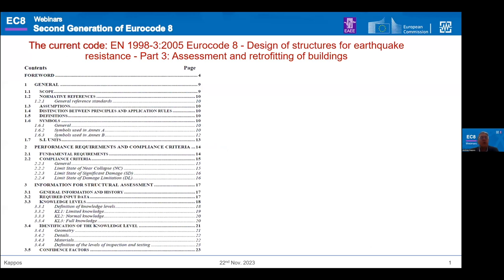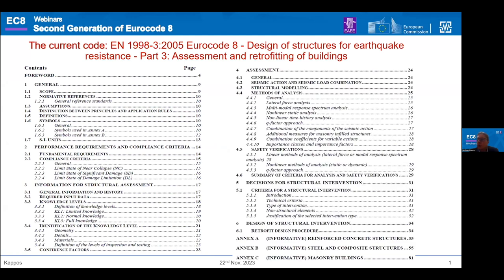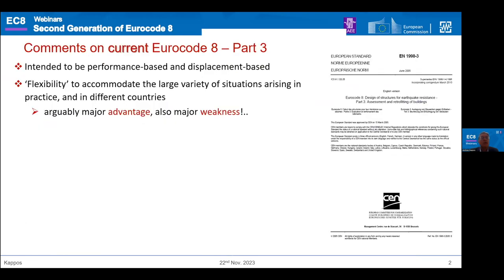Each of the colleagues of this very strong team will have the chance to present in much more detail what I will show very briefly. I will assume for the sake of time that you are more or less familiar with the current Eurocode 8 Part 3. Its main characteristic, as you may see on screen, is that the really useful information — most of it — comes in the informative annexes. This is one of the things we had to address when we started drafting the new Eurocode 8 Part 3.